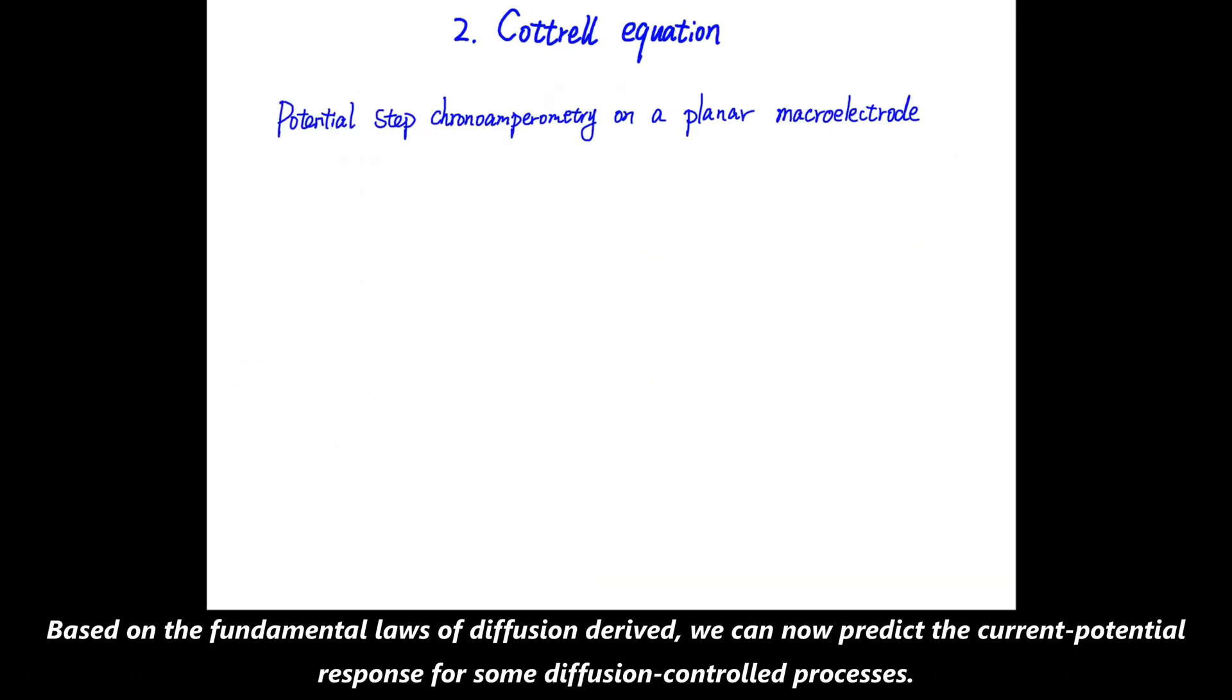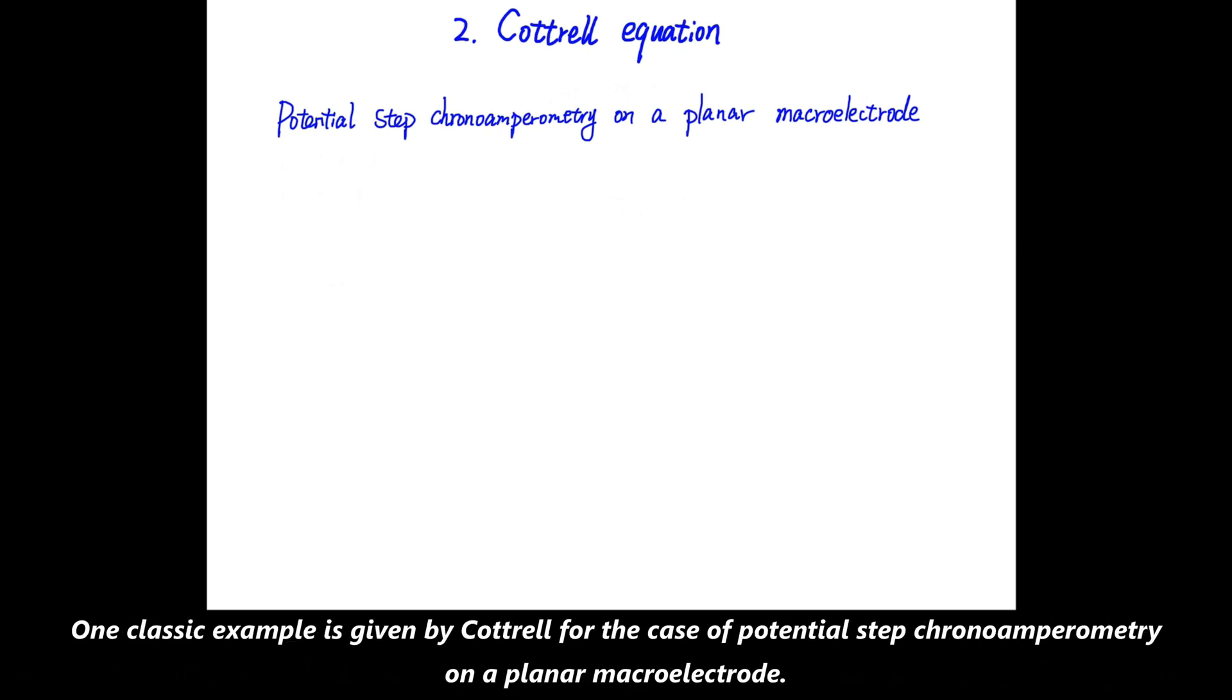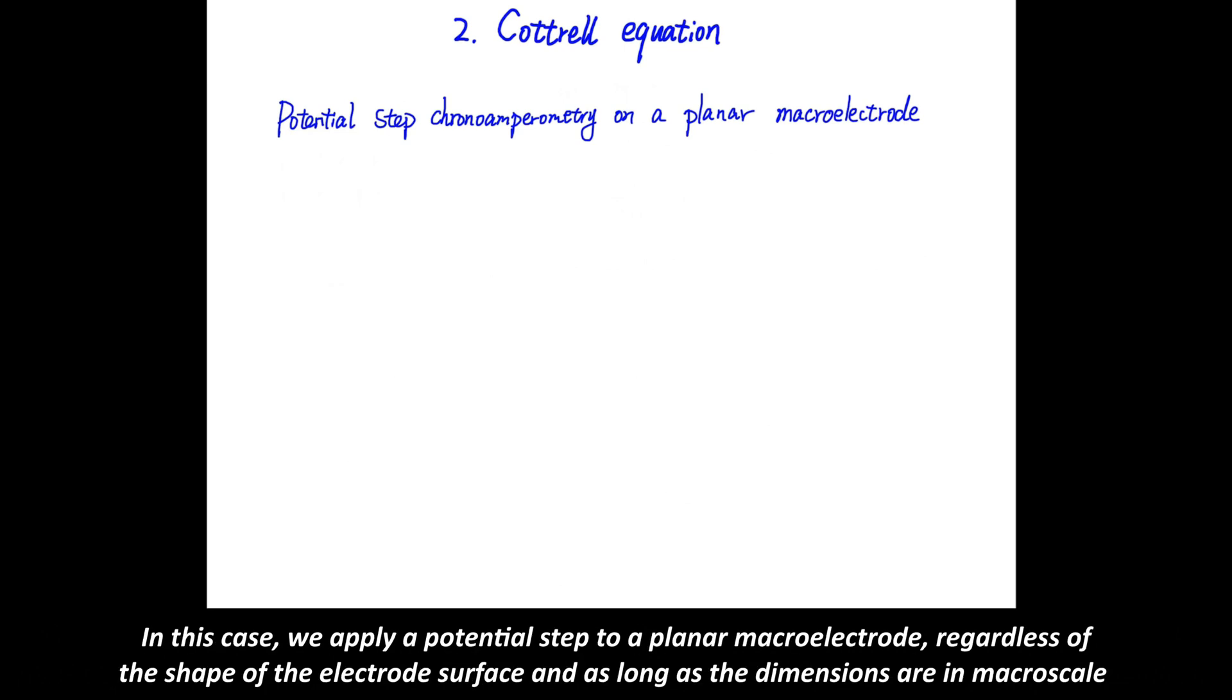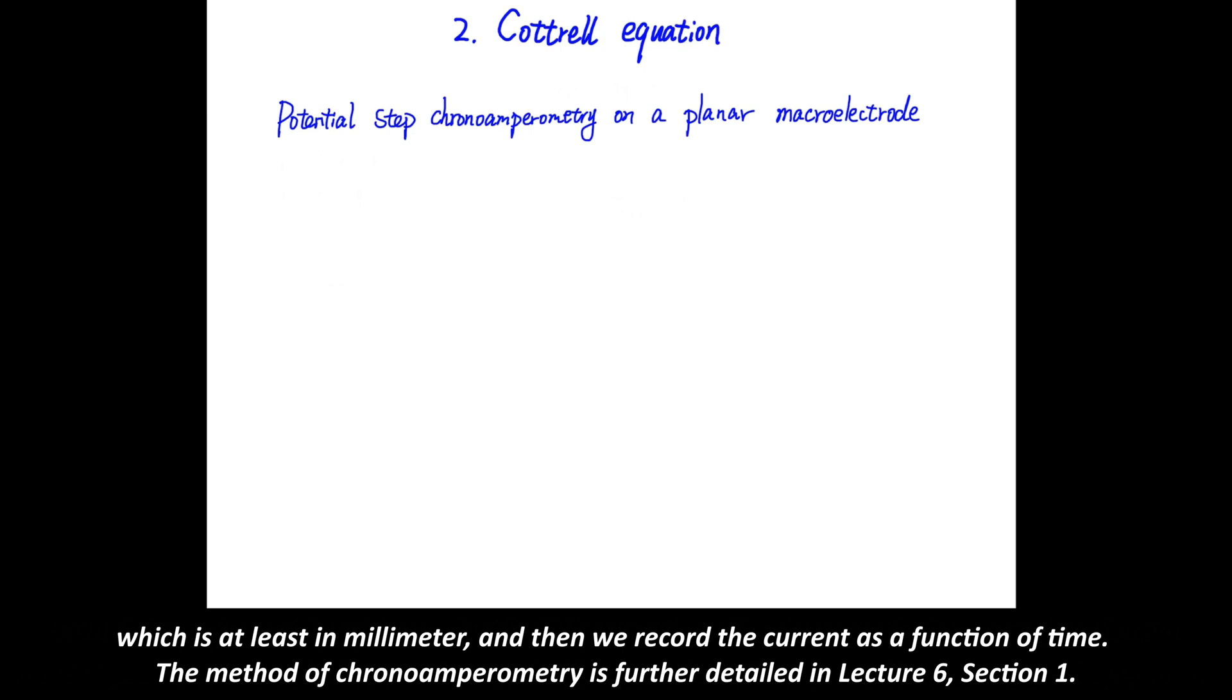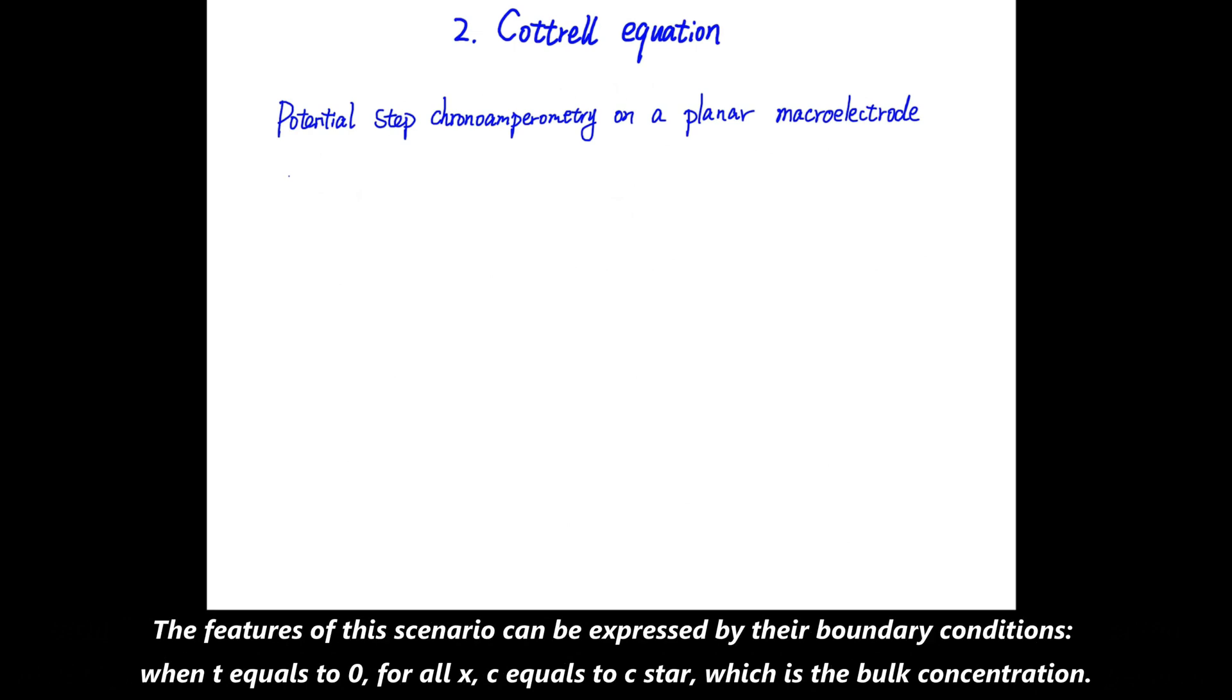Based on the fundamental laws of diffusion derived, we can now predict the current time response for some diffusion controlled processes. And one classic example is given by Cottrell for the case of potential step chronoamperometry on a planar macroelectrode. In this case, we apply a potential step to a planar macroelectrode, regardless of the shape of the electrode surface. And as long as the dimensions are in macroscale, which is at least in millimeter, and then we record the current as function of time. The method of chronoamperometry is further detailed in lecture 6, section 1.